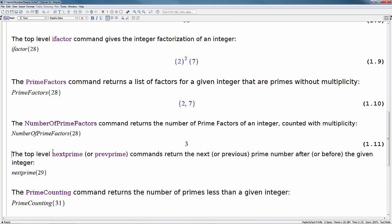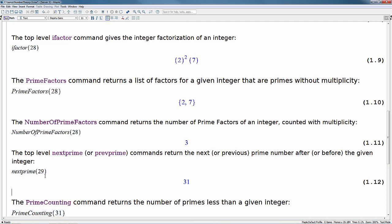Some more commands for working with prime numbers. The top level next prime or previous prime commands return the next or previous prime number after or before the given integer. So we knew before that 29 is a prime. So if we do next prime after 29, we'll see that the next prime after 29 is 31.